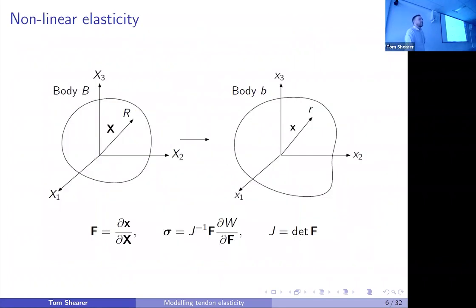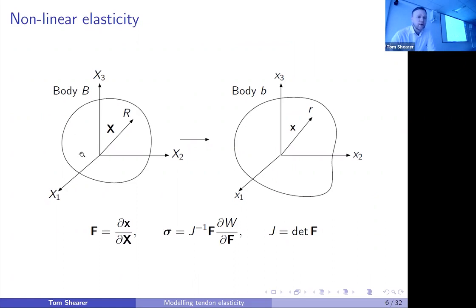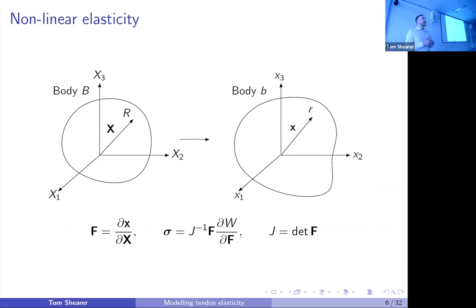The stress-strain behavior of a ligament or tendon is non-linear, so we need a non-linear mechanical theory. I'm going to use the framework of non-linear elasticity. In non-linear elasticity, we always refer back to a reference configuration defined in terms of Lagrangian coordinates. We assume this body is deformed to a new configuration, and we characterize the deformation by the deformation gradient tensor F — the derivatives of the deformed position vector with respect to the undeformed coordinates. From F, we calculate and predict the stresses.